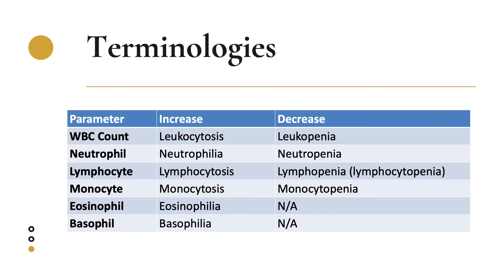Let's now look at the different terminologies related to WBC parameters. For WBC count, an increase is called leukocytosis, while a decrease is called leukopenia. For neutrophils, an increase is called neutrophilia and a decrease is called neutropenia. For lymphocytes, an increase is called lymphocytosis and a decrease is called lymphopenia or lymphocytopenia. For monocytes, an increase is monocytosis and a decrease is monocytopenia. For eosinophils and basophils, an increase is called eosinophilia and basophilia, respectively.